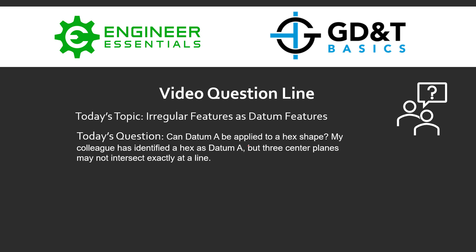Hey everybody, Jason here again with the GD&T Basics Video Question Line. Today's topic is irregular features as datum features. Today's question is: Can datum A be applied to a hexagon shape? My colleague has identified a hex shape as datum A.